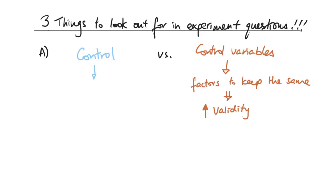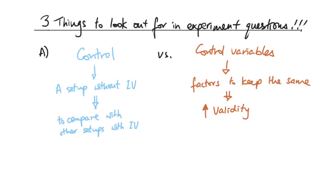A control setup is entirely different from control variables. The control setup is a setup without the independent variable, and the whole point is to compare it with the other setups that do have the independent variable. The idea is to show that any result observed is because you changed something in the experiment, and the result is not due to the original materials or equipment used.